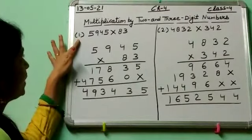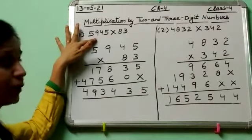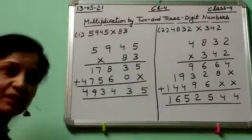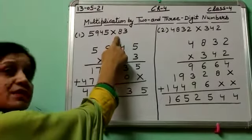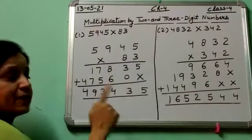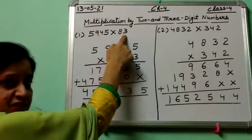First in this you have to multiply 5945 by 83. In 83, at 1's place is 3 and at 10's place is 8. So you have to multiply first this whole number by the 1's place digit, means by 3.